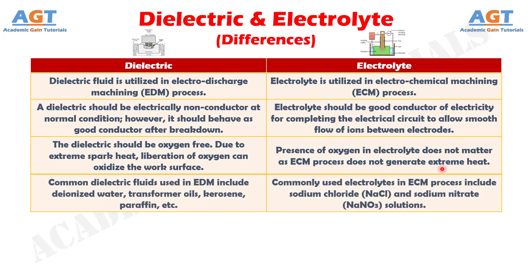Difference number four: common dielectric fluids used in electro discharge machining include deionized water, transformer oils, kerosene, paraffin, etc. Whereas commonly used electrolytes in electrochemical machining process include sodium chloride and sodium nitrate solutions.